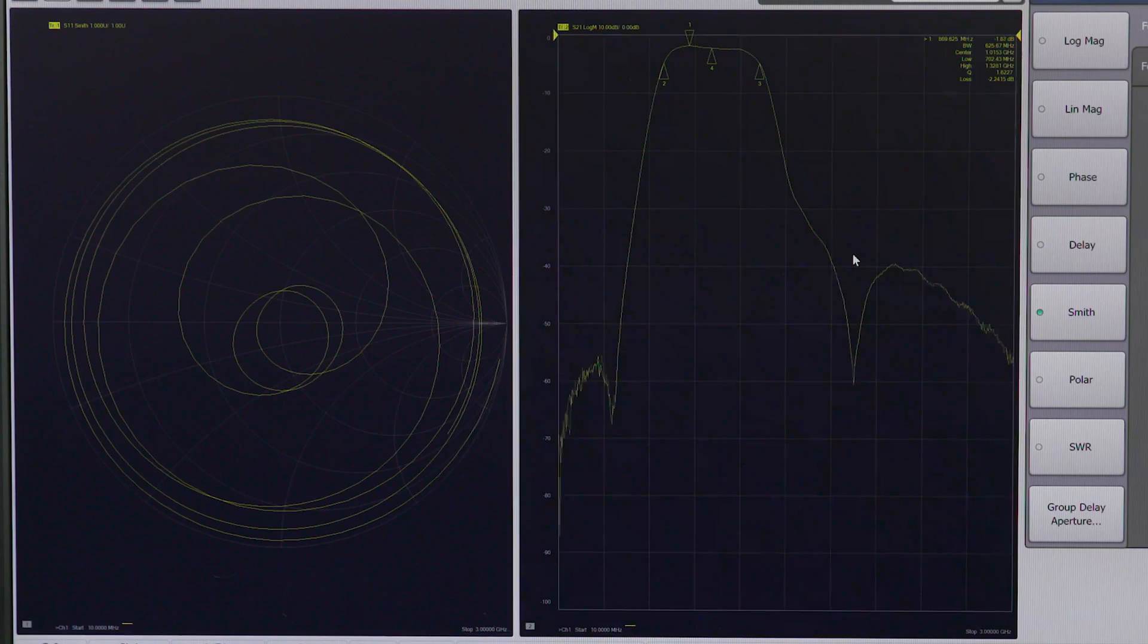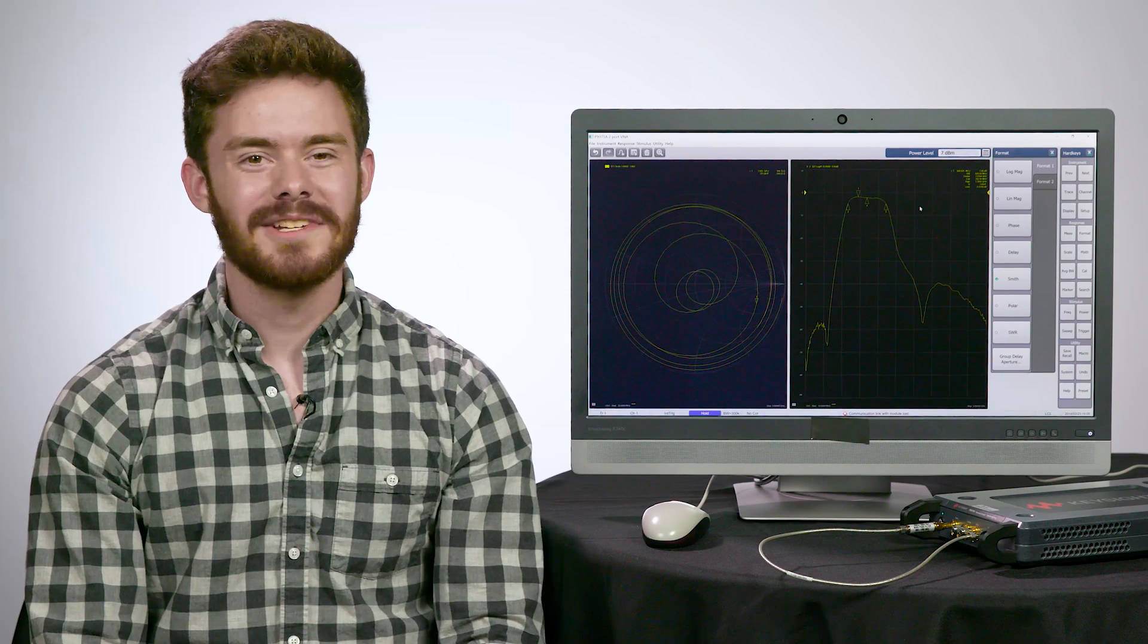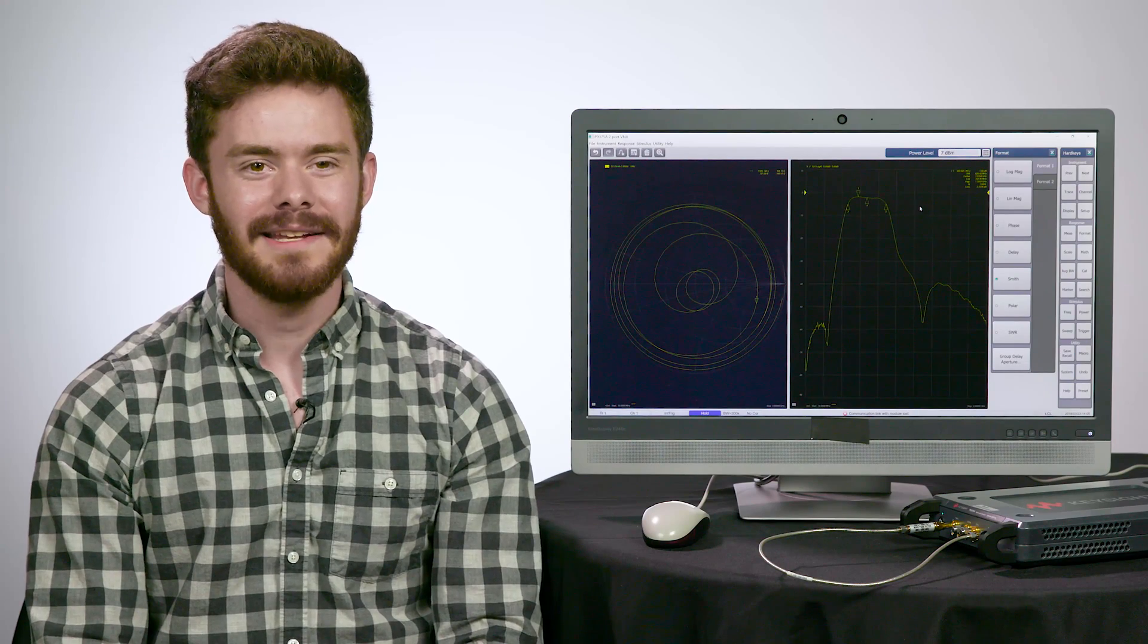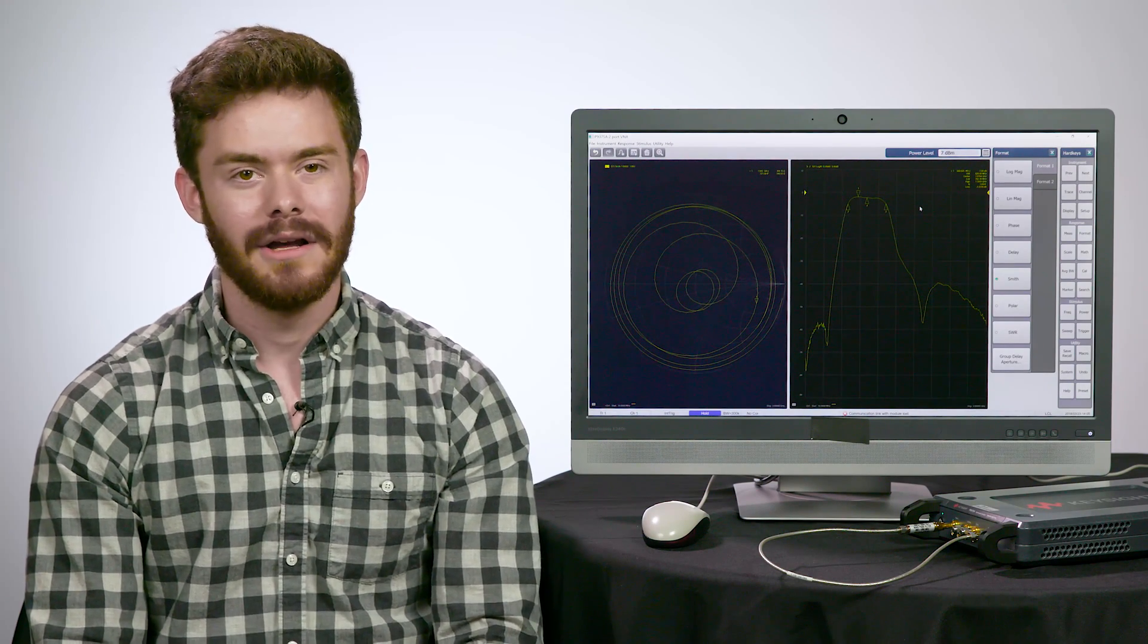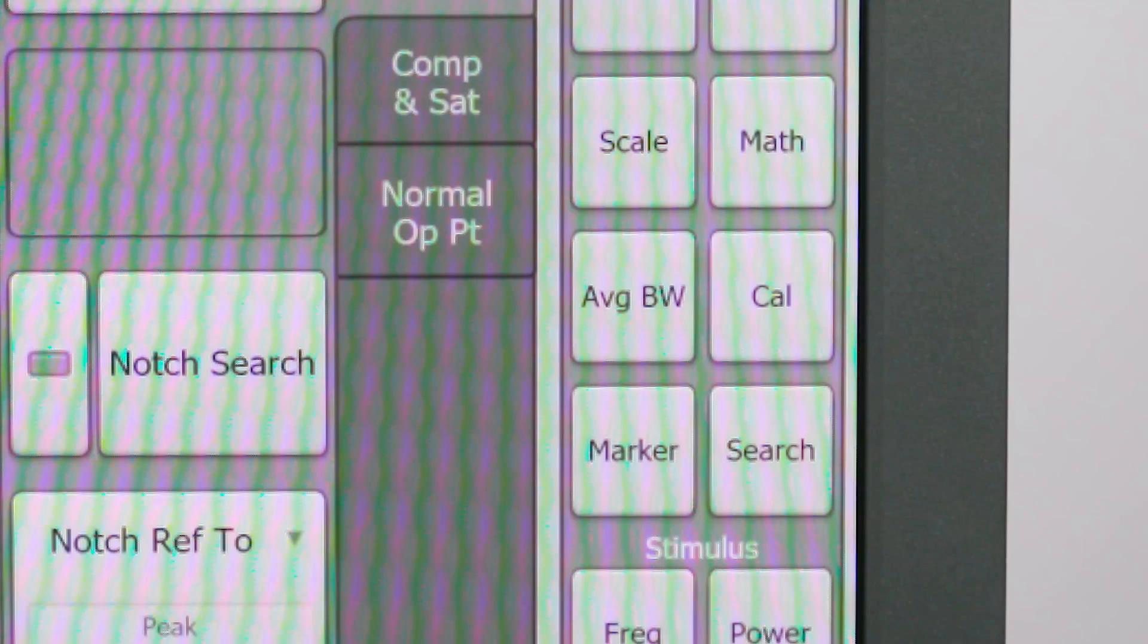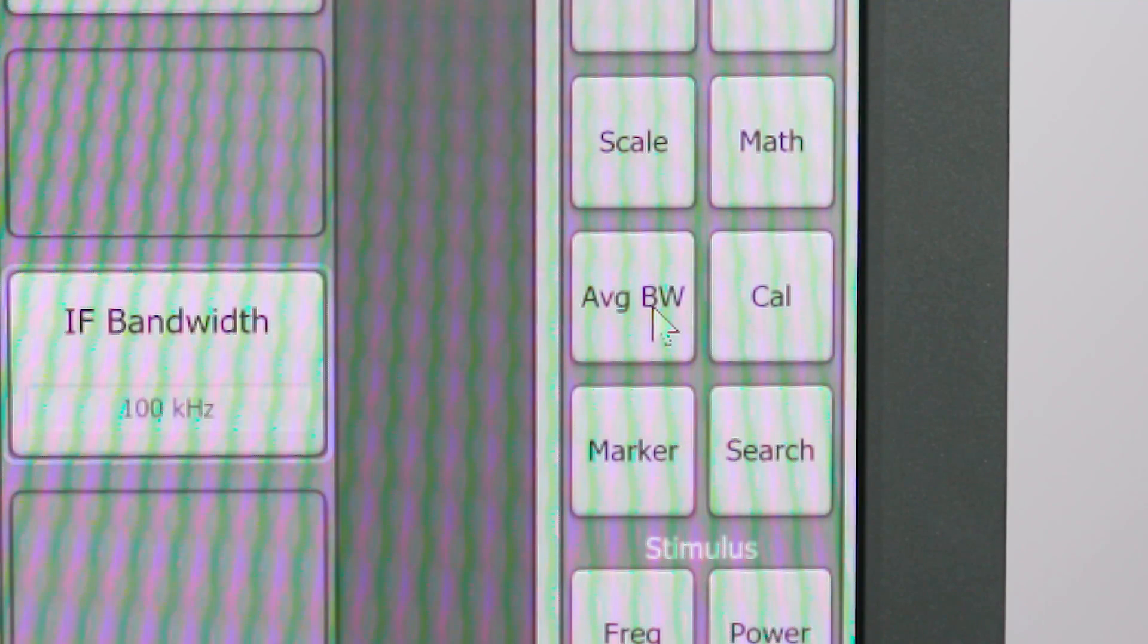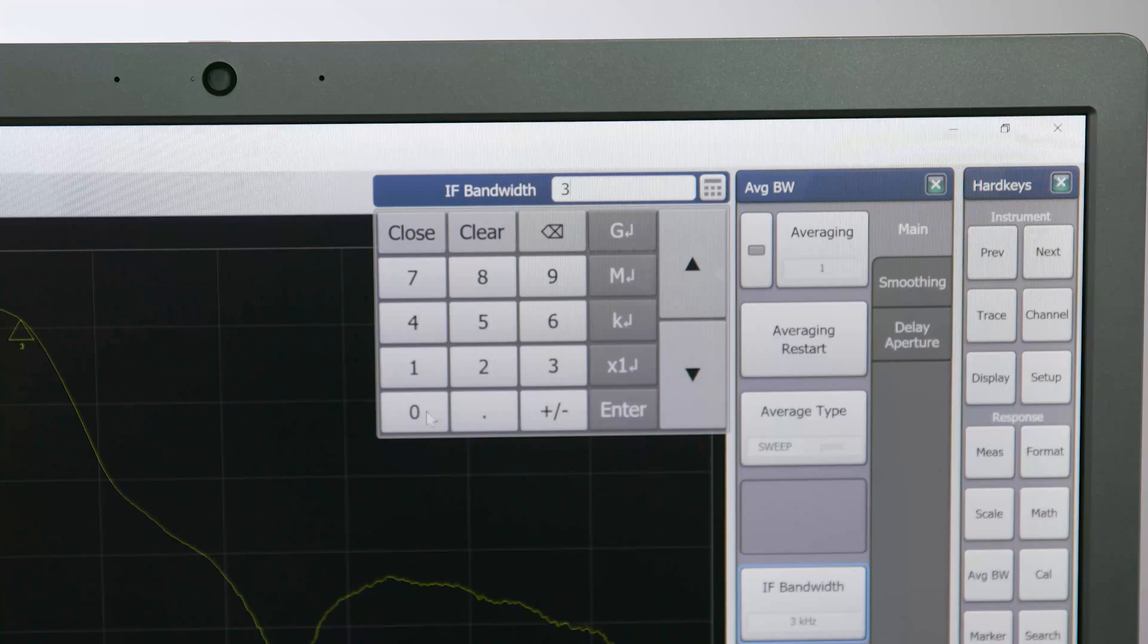Lastly, let's learn about how to speed up measurements and improve their accuracy. First, I'll double click on the S21 window to maximize that on screen. In order to speed up the measurements, we need to make the Intermediate Frequency Bandwidth, or IF bandwidth, wider. The wider the IF bandwidth is set, the faster the measurements can be performed. So, let's set the IF bandwidth to 300 kHz by going to Average Bandwidth, IF Bandwidth, and enter that frequency.